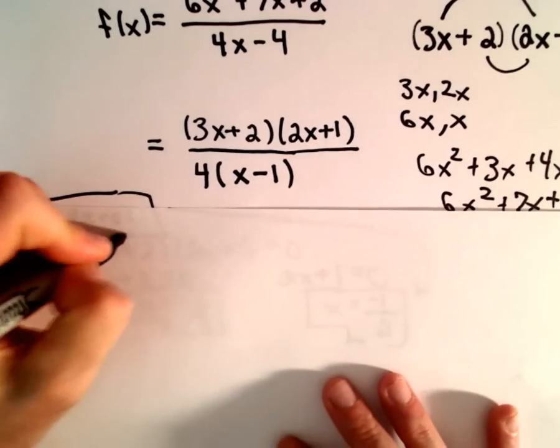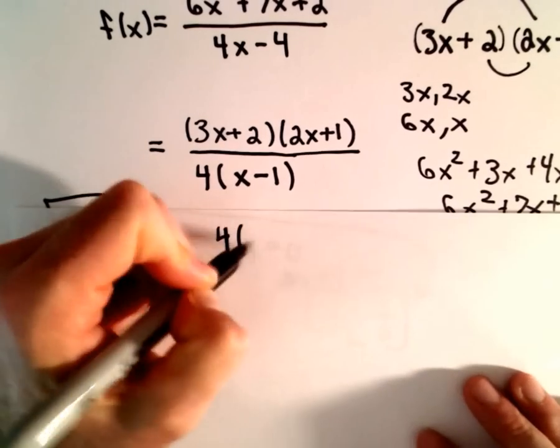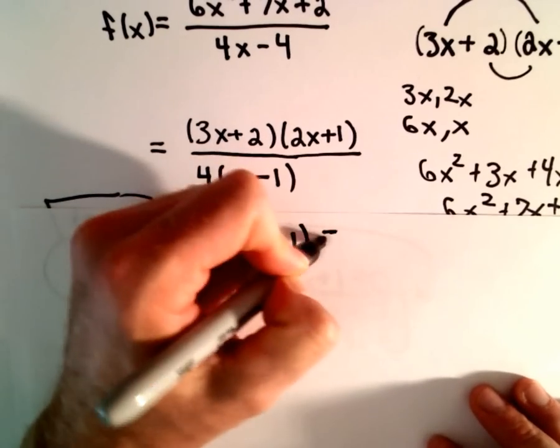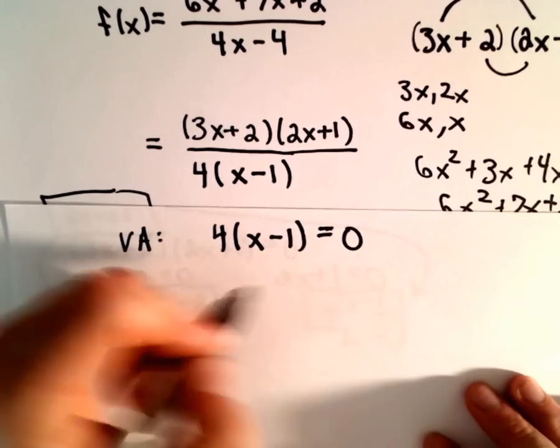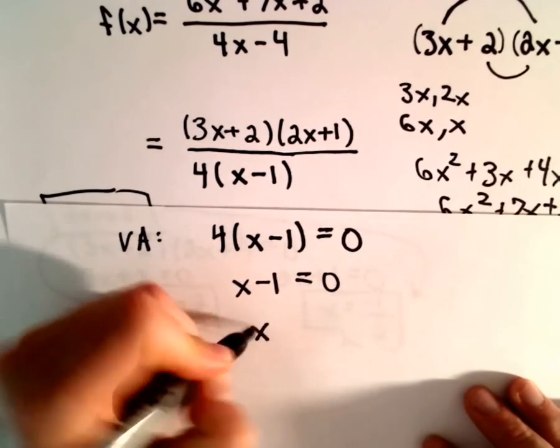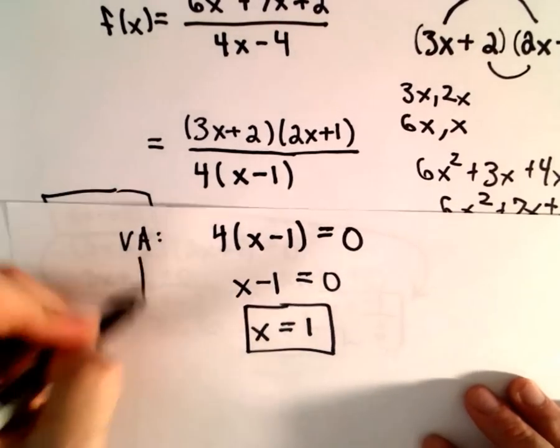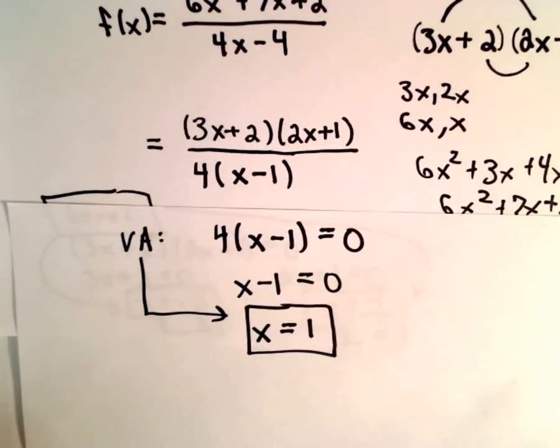And likewise, to get the vertical asymptotes, all I have to do is take the denominator and set it equal to zero. You can divide by 4, that'll just leave us with x - 1 = 0. We can add 1 to both sides, that'll give us x = 1. So that's our vertical asymptote.